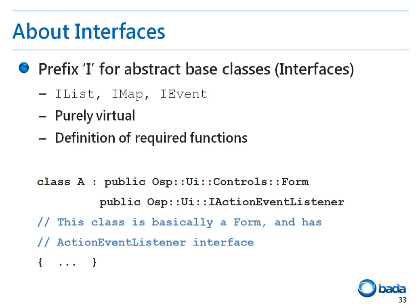Another example of an interface is an event listener. As you can see in the code, if a class is defined as both a form and as an iActionEventListener, even though this class is a subclass of the form, this class can be used as the event listener to handle an action event.